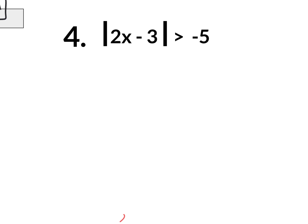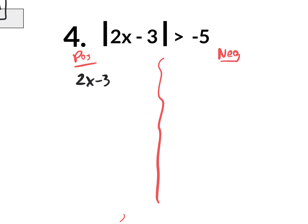Because it's already isolated, you now jump to the positive situation and negative situation. The positive situation: rewrite it exactly as is without the absolute values — 2x minus 3 is greater than negative 5. For the negative situation: it's the same — 2x minus 3 — but instead of the greater than, you flip it to a less than, and that negative 5 becomes a positive 5. So on the negative situation you have 2x minus 3 less than positive 5.